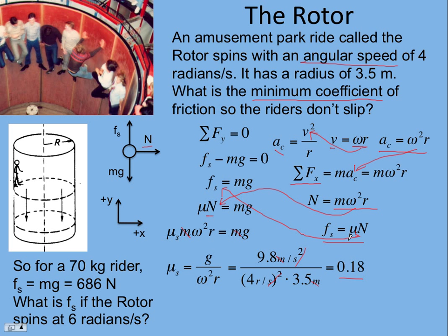What if we had a 70 kilogram rider? We know friction equals the weight, so f_s = mg = 686 newtons. What if we spun the rotor faster at 6 radians per second—what would happen to the force of friction? See if you can figure that out. Pause the video.